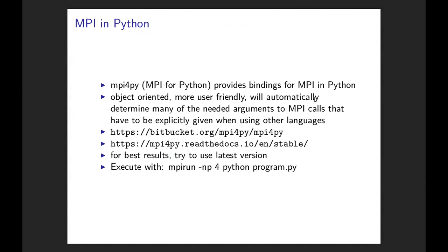Here are the links where you can find MPI4PY and the documentation. For best results, try to use the latest version. For example, if you are installing MPI4PY on your Ubuntu box, it might install an older version which is buggy and poorly documented. So really try to get the latest version. When you have everything installed, the way you run your Python MPI program is with the command: mpirun, then the number of processes you want with the -np flag, then the Python command and your Python program.